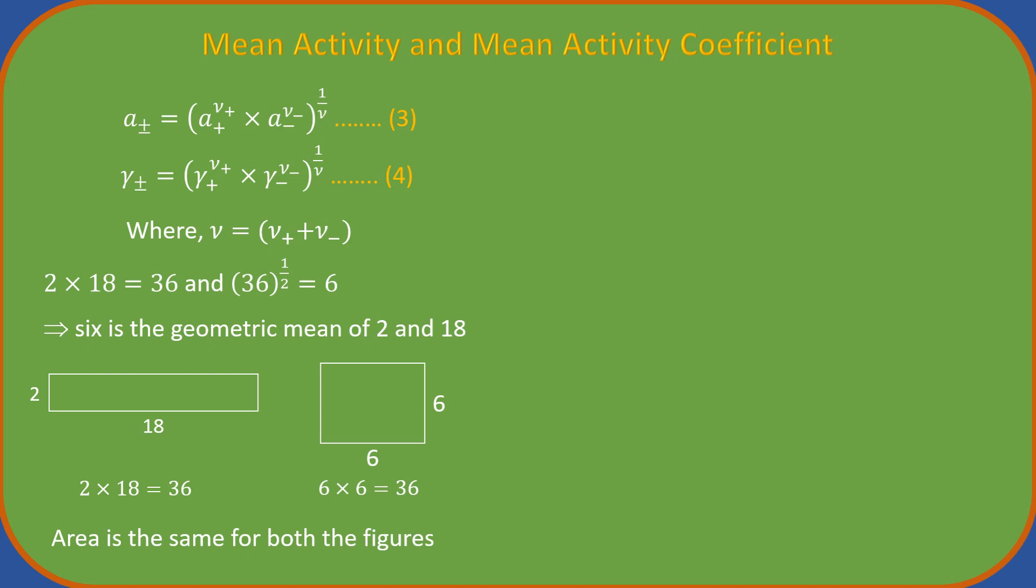From equations 2 and 3, we can arrive at the following, which we denote as equation 5. The activity of each ion may be written as the product of activity coefficient and concentration. Here we use molality. Therefore we get.